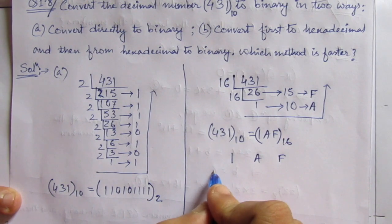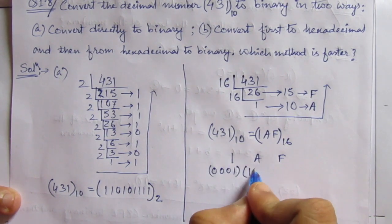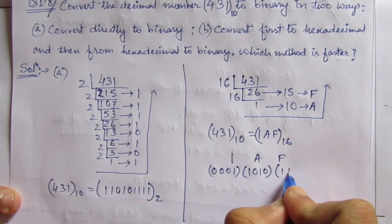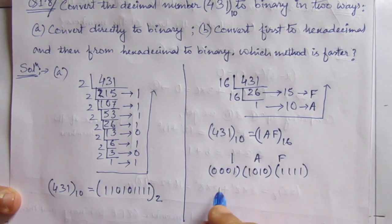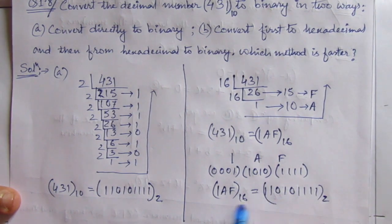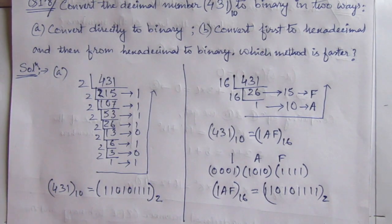So 1 we can write as 0001. This A is 10, 1010. And last is F, that is 1111. So we got 1AF in hexadecimal equal to, you can discard these zeros, 110101111. These two numbers are same. We got the same result. That means our operations are correct.